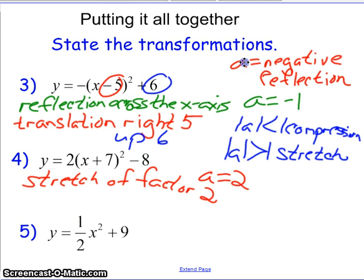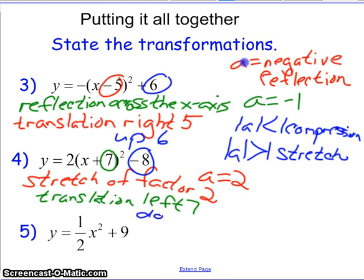Now the H and the K are the translations. So H is positive. So it is moving to the left. So this is a translation to the left seven. And then K is the up or down movement. And so we're going to say down eight.